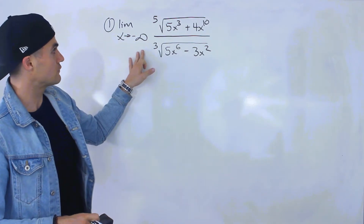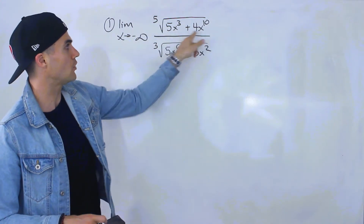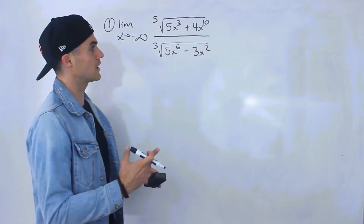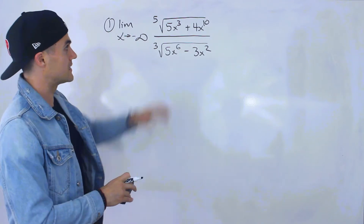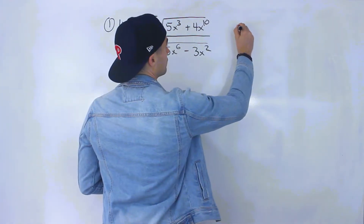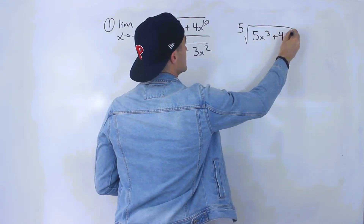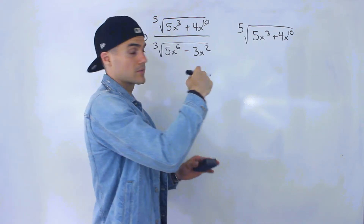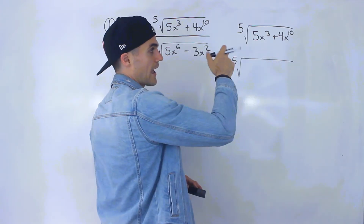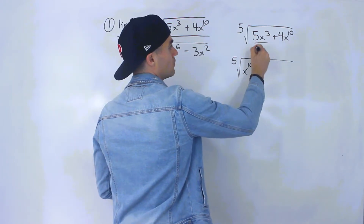We have the limit as x approaches negative infinity of the fifth root of 5x³ plus 4x^10, all over the third root of 5x⁶ minus 3x². Notice there are multiple expressions under the radical. The first thing we need to do, like in previous examples, is factor out x to the highest power — which is x^10 in the numerator.